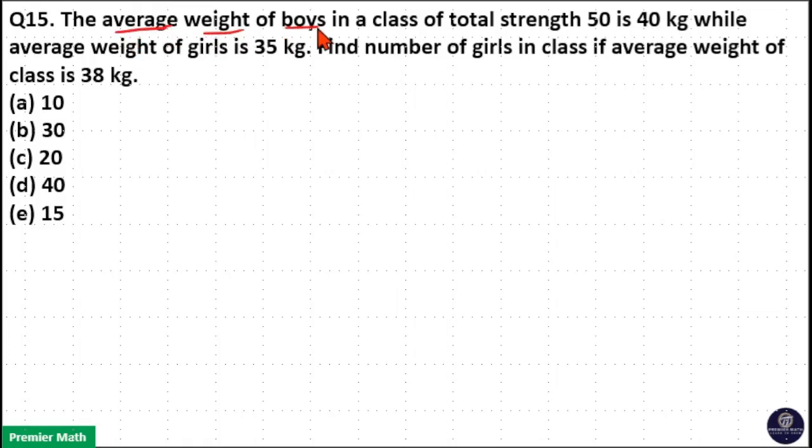The average weight of boys in a class of total strength 50 is 40 kg while average weight of girls is 35 kg. Find the number of girls in class if average weight of class is 38 kg.